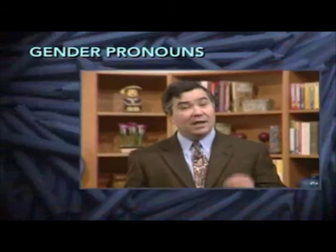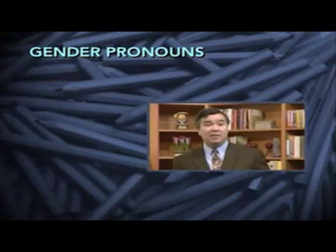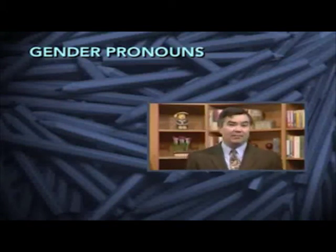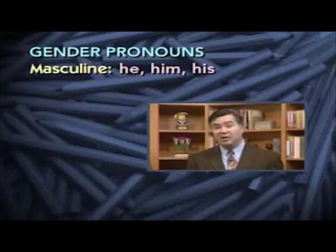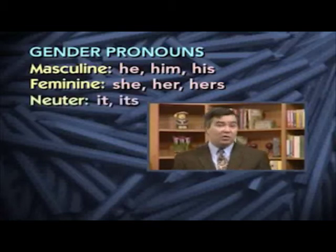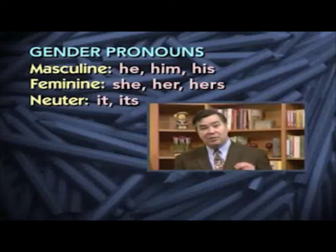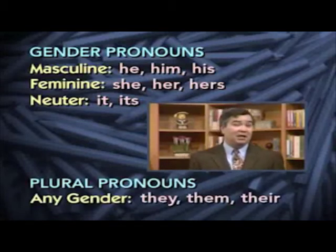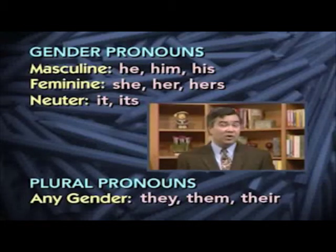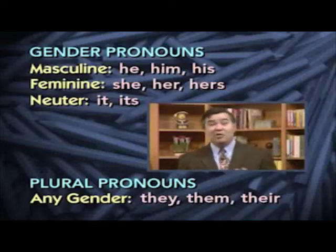The pronouns he, him, and his are masculine. The pronouns she, her, and hers are feminine. The neuter pronouns are it and its, used for antecedents that are neither masculine nor feminine. Notice that the plural pronouns they, them, and their can be used for antecedents of any gender — masculine, feminine, or neuter. So once you move from singular to plural, everything becomes very simple — you don't have to worry about gender anymore. In most sentences, you won't run into any difficulty in following these rules and making sure that pronouns and antecedents match in both number and gender. But there are a few tricky situations that arise, and we'll cover those now.